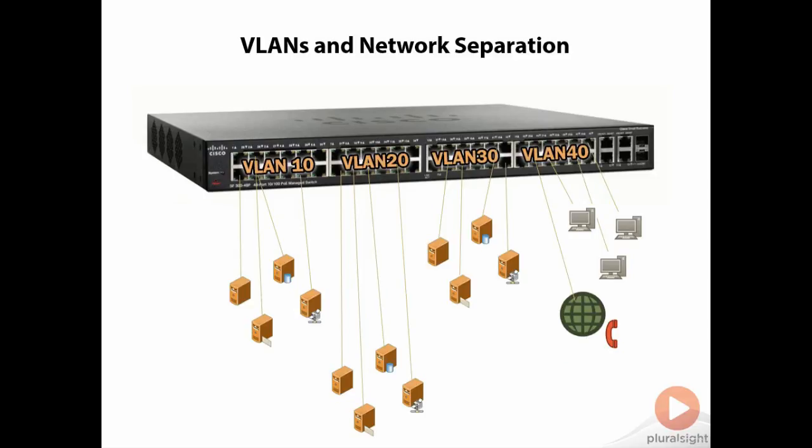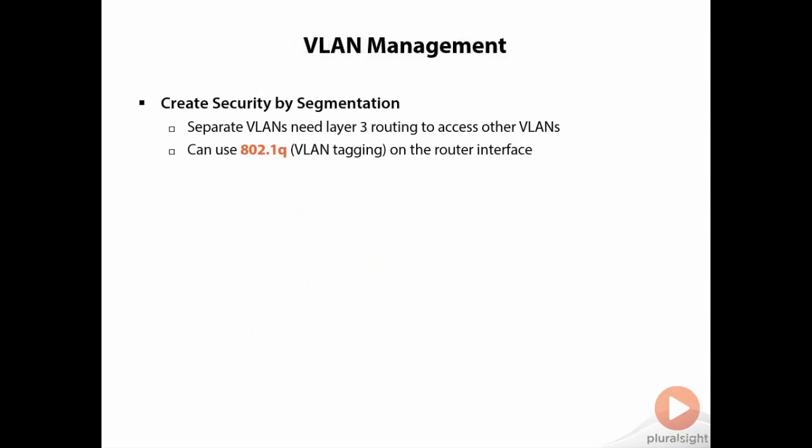That way it separates the traffic. It creates separate broadcast domains so that if, for instance, PC1 on VLAN 20 sends out a broadcast, it's only going to come back out of the ports within VLAN 10. It makes it much more secure, and we can create security by what's called segmentation — separating the VLANs. At that point, we need a Layer 3 switch or a router to access other virtual local area networks.